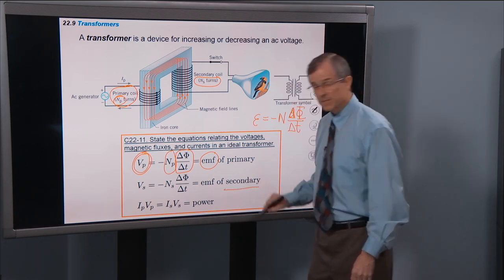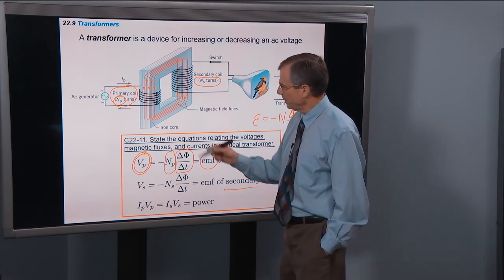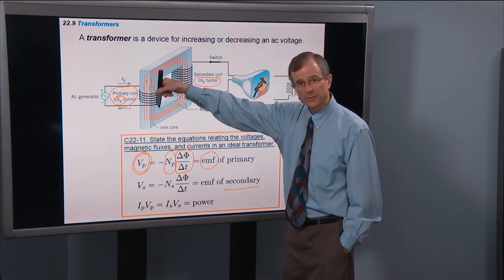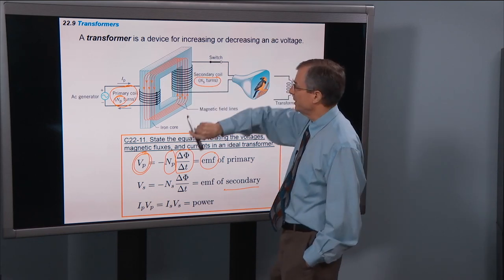We'll do the same thing for the secondary coil. So, we're going to assume that this iron core channels all of the changing flux through the primary, all of the flux through the primary, through secondary.